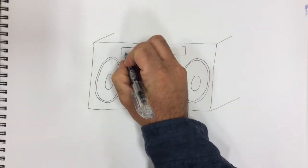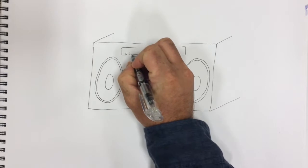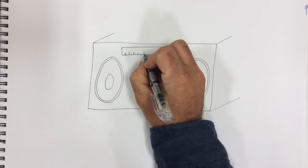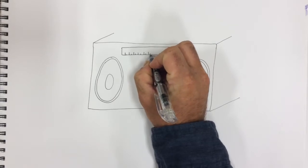So the next step is to make some lines. I'm gonna go long short long short all the way across. If you want to get super detailed you could add numbers for the radio stations.